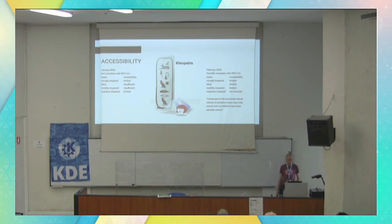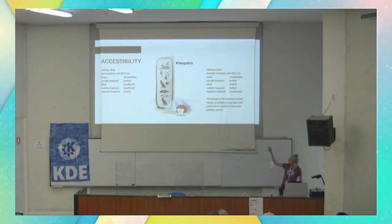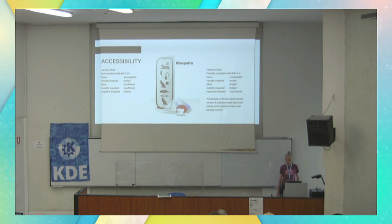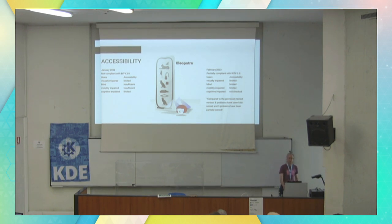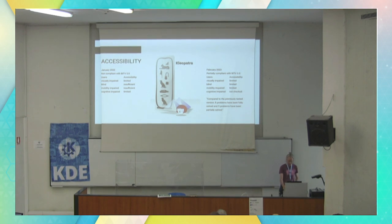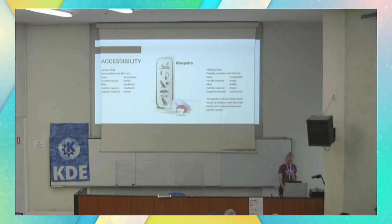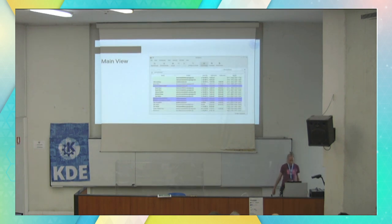The check for cognitively impaired persons was not repeated. Compared to the previously tested version, 8 problems have been fully resolved and 5 problems have been partially solved. A few more things were solved but the testers didn't find some of the things we fixed. They did find new things, which is good and a bit bad.